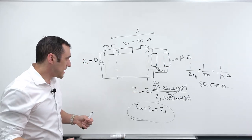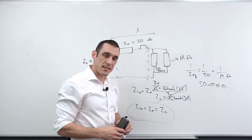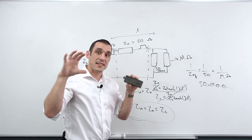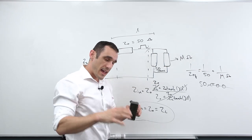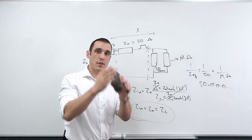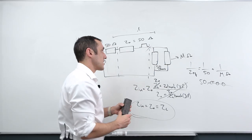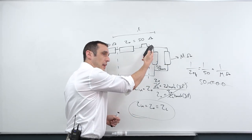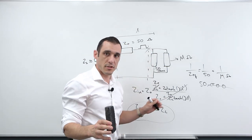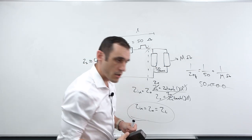In RF design it's much easier to calculate one specific value for Z sub in. Sometimes in RF designs you have different transmission line sections that are cascaded, and you need to know the input impedance at each interface between different lines — that determines whether your signal reflects off those interfaces. The same concern about reflections applies in digital circuits just as it does in RF circuits.